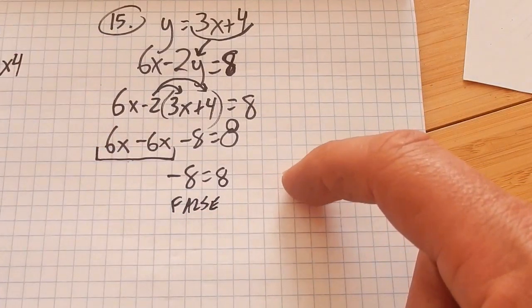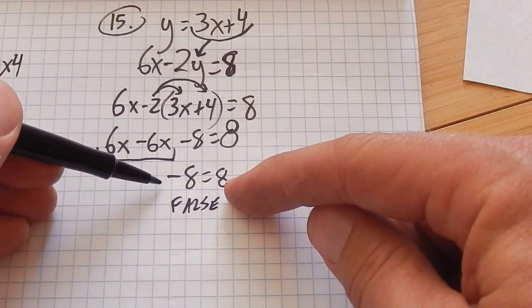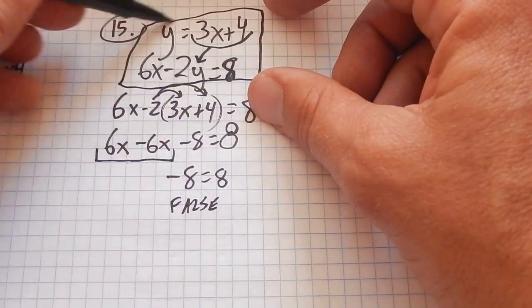That equals, oh, it doesn't equal 0, it equals 8. Sorry. Good. Combine some like terms. 6x minus 6x, that's 0. And I'm left with negative 8 equals 8.